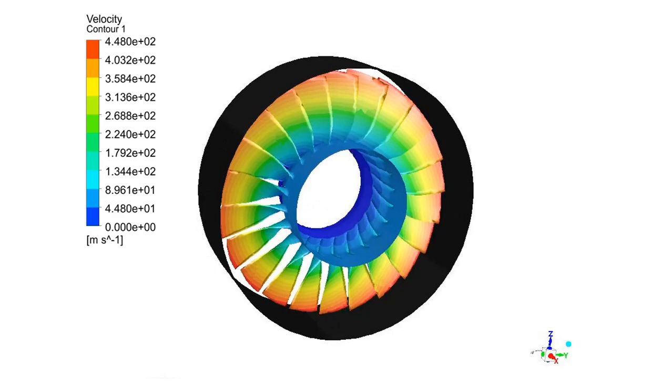As can be seen in the velocity contour, by getting away from the center of rotation, as was expected, the speed of the blades will increase. And by increasing in this rotor speed, the airflow velocity will increase as well.